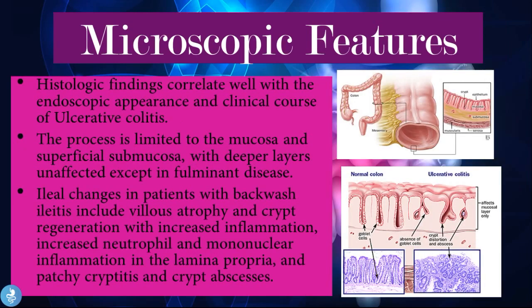Now let's talk about the microscopic features. Histological findings correlate well with the endoscopic appearance and clinical course of ulcerative colitis. The process is limited to the mucosa and superficial submucosa, with deeper layers unaffected except in fulminant disease. Ileal changes in patients with backwash ileitis include villous atrophy and crypt regeneration, with increased neutrophil and mononuclear inflammation in the lamina propria, and patchy cryptitis and crypt abscesses developing in the terminal portion of the ileum.